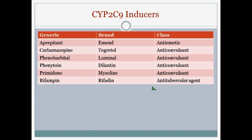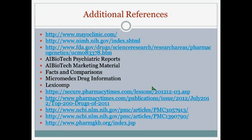For CYP2C9 inducers, notably many of these are anticonvulsants: carbamazepine, phenobarbital, phenytoin, and primidone. Rifampin appears on several lists as well. These are not all-inclusive lists, but a good starting point for looking up specific inhibitors and inducers. References are listed, many of which are online sources. The top 200 drug list was sourced from Pharmacy Times, with the link on the slide, and those are the medications highlighted in blue font.